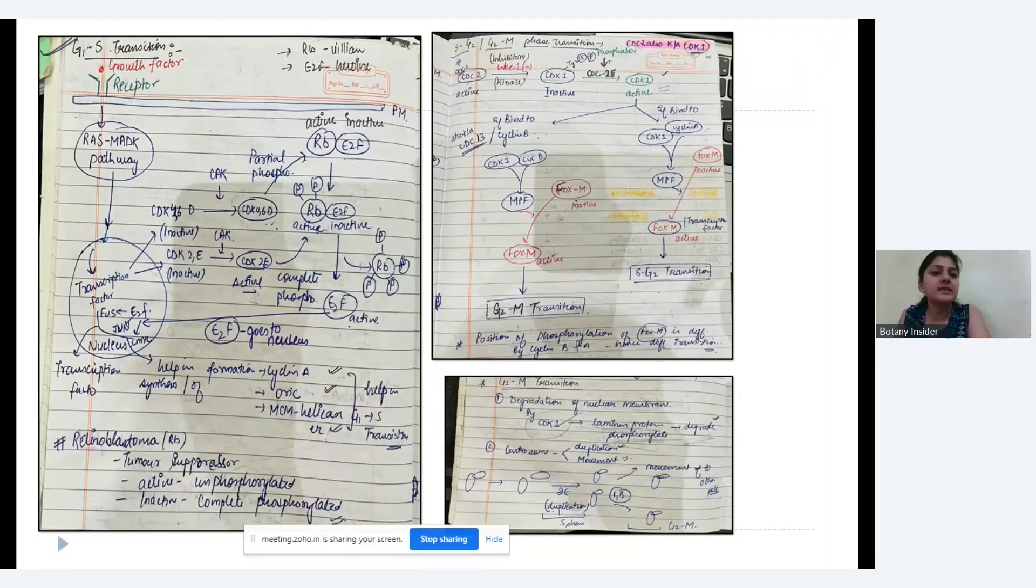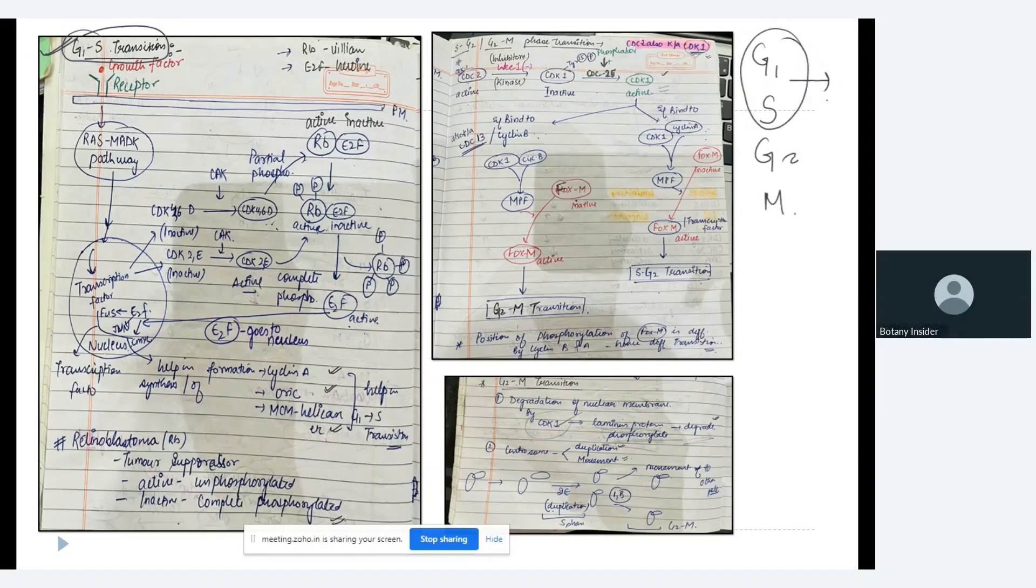Okay, so the very first one is G1 to S transition. In this particular transition the most important thing we have to remember is in every checkpoint there is one thing that needs to be done and that is whether the complete work that has to be done in the previous phase is completed or not. That means whatever work in G1 phase has to be done whether it is completed or not. This is the main primary goal of the checkpoints or the transition. So the very first one is the G1 to S transition.